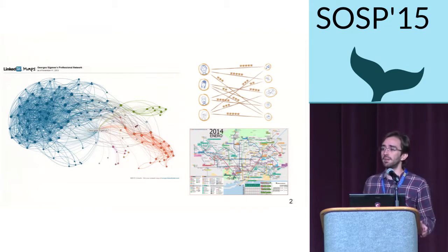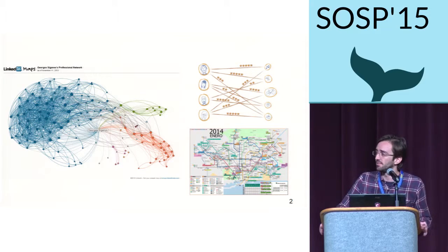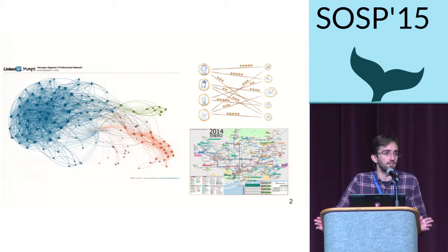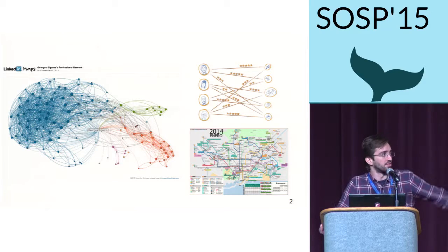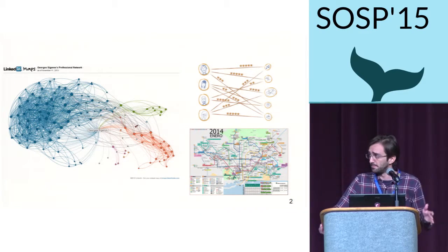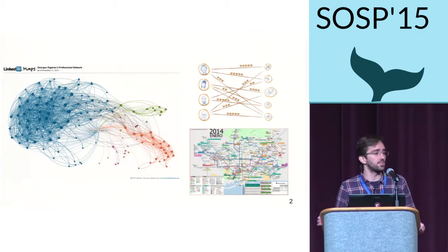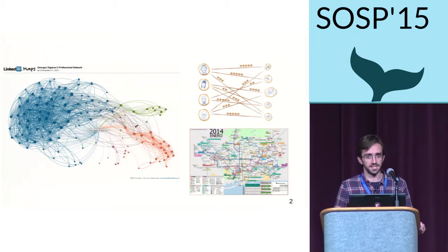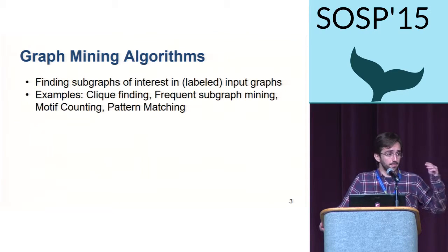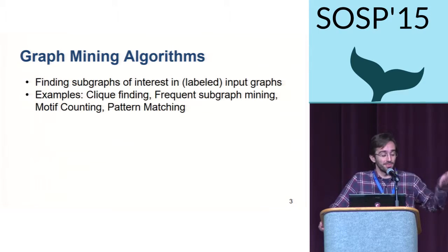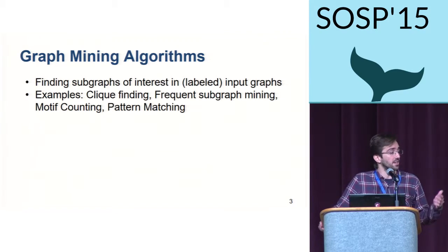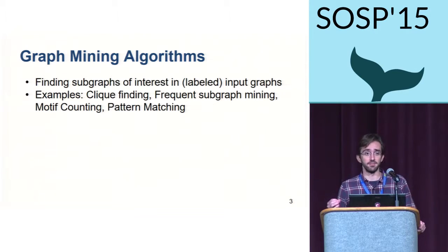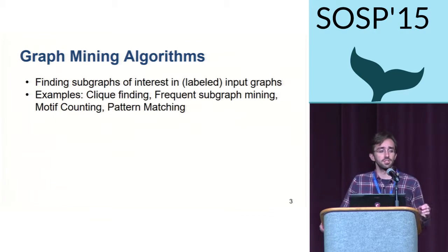We can find graphs everywhere in our lives, from social networks to transportation systems, even in chemistry. Each one of these graphs encodes within themselves a vast amount of useful information that is ready to be extracted. The previous presentation was focused on graph analytics, but another way of extracting this information is mining the graph. Graph mining algorithms focus on finding subgraphs of interest in a certain input graph.